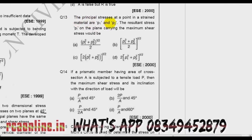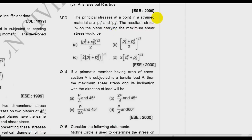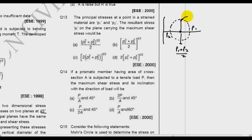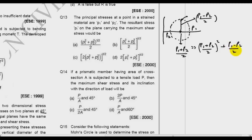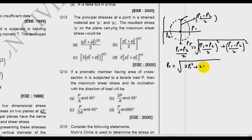Question number 13: The principal stresses at a point in a strained material are P1 and P2. The resultant stress PR on the plane carrying the maximum shear stress would be — we solve using Mohr circle. The center coordinate is (P1 + P2)/2 and the maximum shear stress ordinate is (P1 − P2)/2. The resultant PR = sqrt[((P1 + P2)/2)² + ((P1 − P2)/2)²] = sqrt[(P1² + P2²)/2]. B is the right answer.